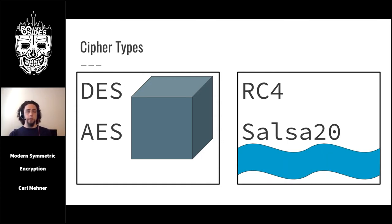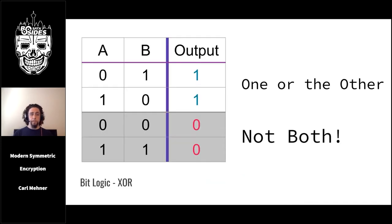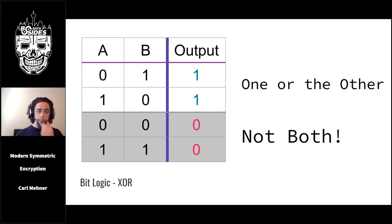Block ciphers operate over chunks of data — they take the data, break it into blocks, and operate over those blocks. Stream ciphers, on the other hand, generate a stream of randomness to combine with a message. That combining is done using a logical XOR, which looks at a pair of bits and sets the output to 1 if the inputs are different, and 0 if both inputs are the same.